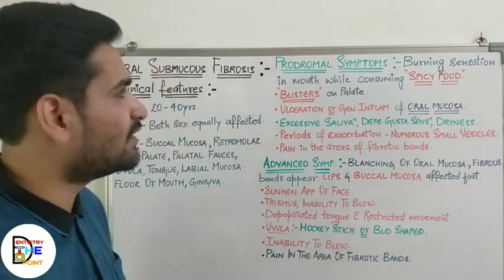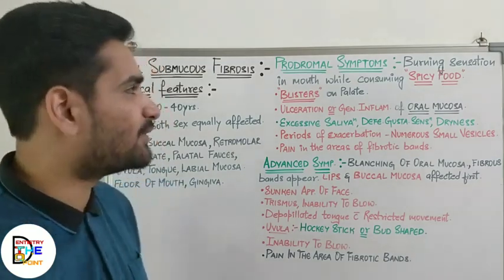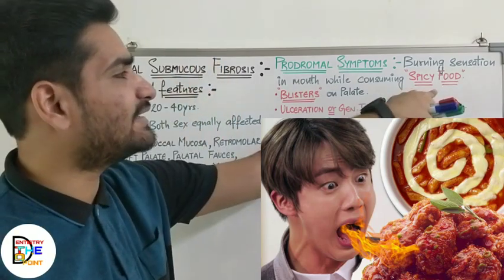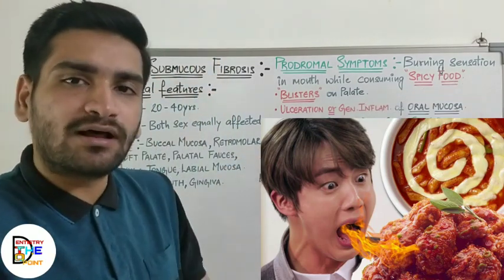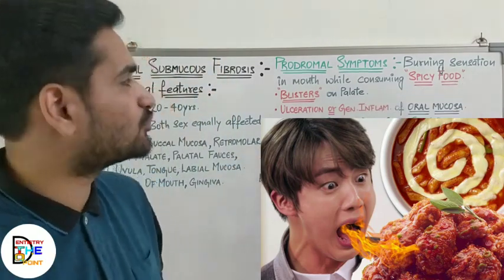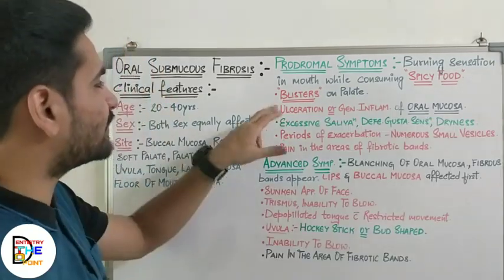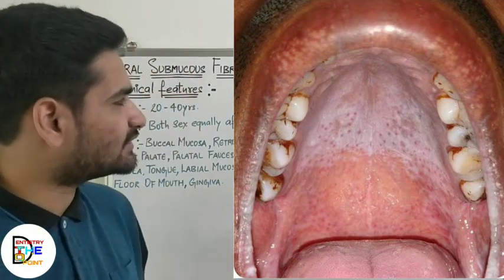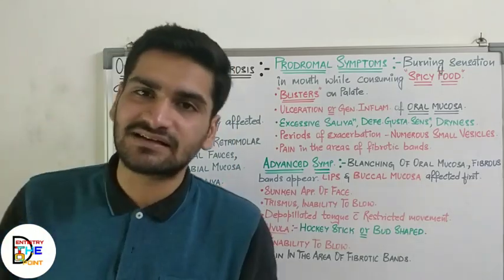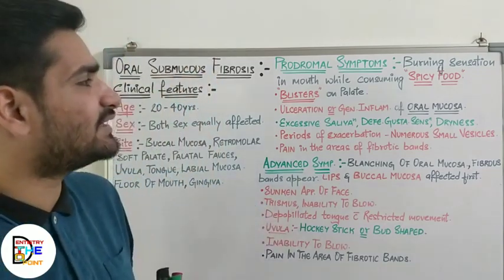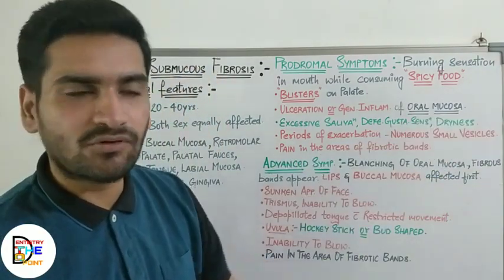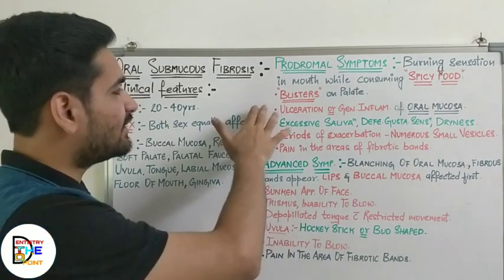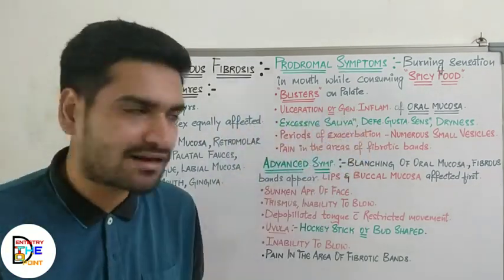Starting with prodromal symptoms: firstly, there is burning sensation in the mouth while consuming spicy food — whenever the oral mucosa is exposed to spicy food the patient experiences burning. Along with that, the patient will present with blisters on the palate, and ulceration with generalized inflammation of the oral mucosa can also be seen.